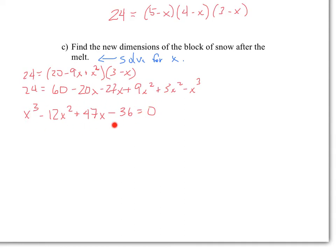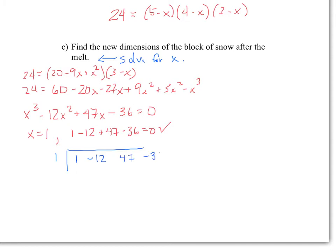Now I can factor this polynomial. The possible zeros to try are the factors of 36. If we plug in X = 1: 1 − 12 + 47 − 36 = 0. That works — X = 1 is our first zero. Now I'll use synthetic division to find the rest. With root 1 and coefficients 1, −12, 47, −36, I bring down the 1, then multiply through.